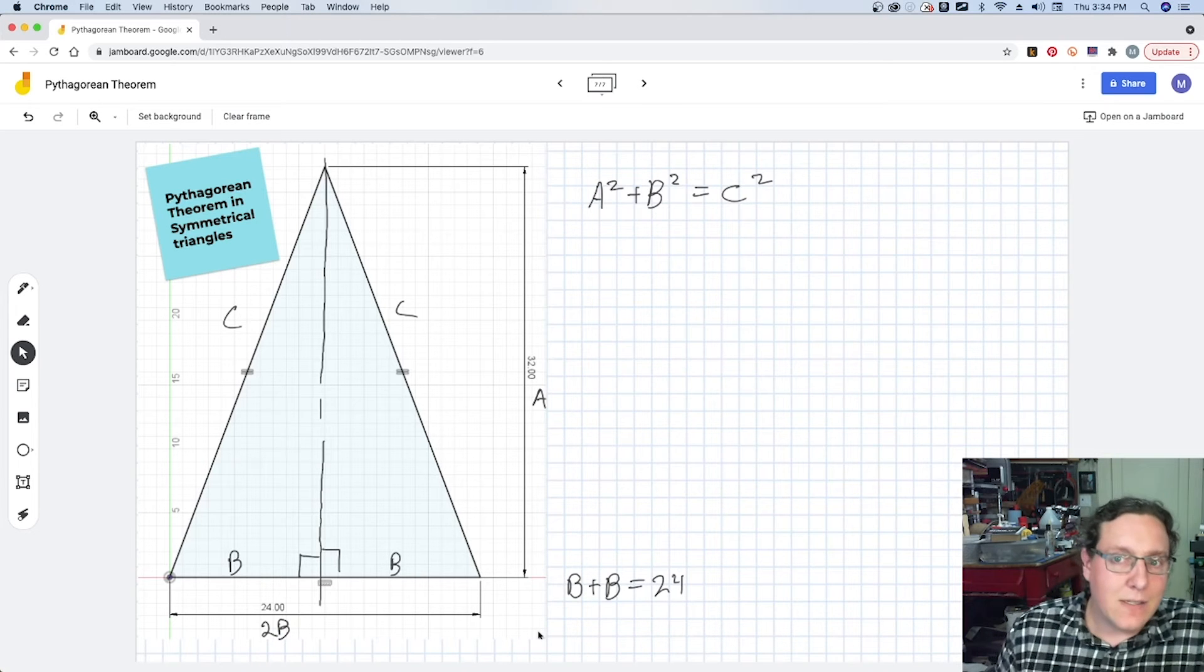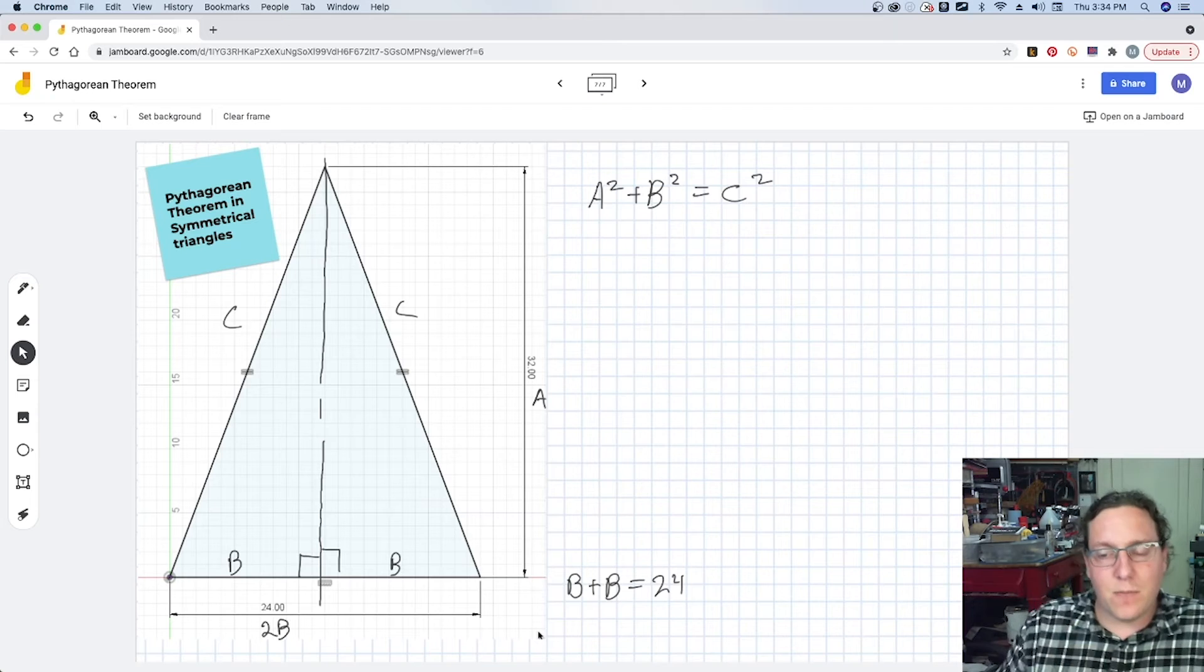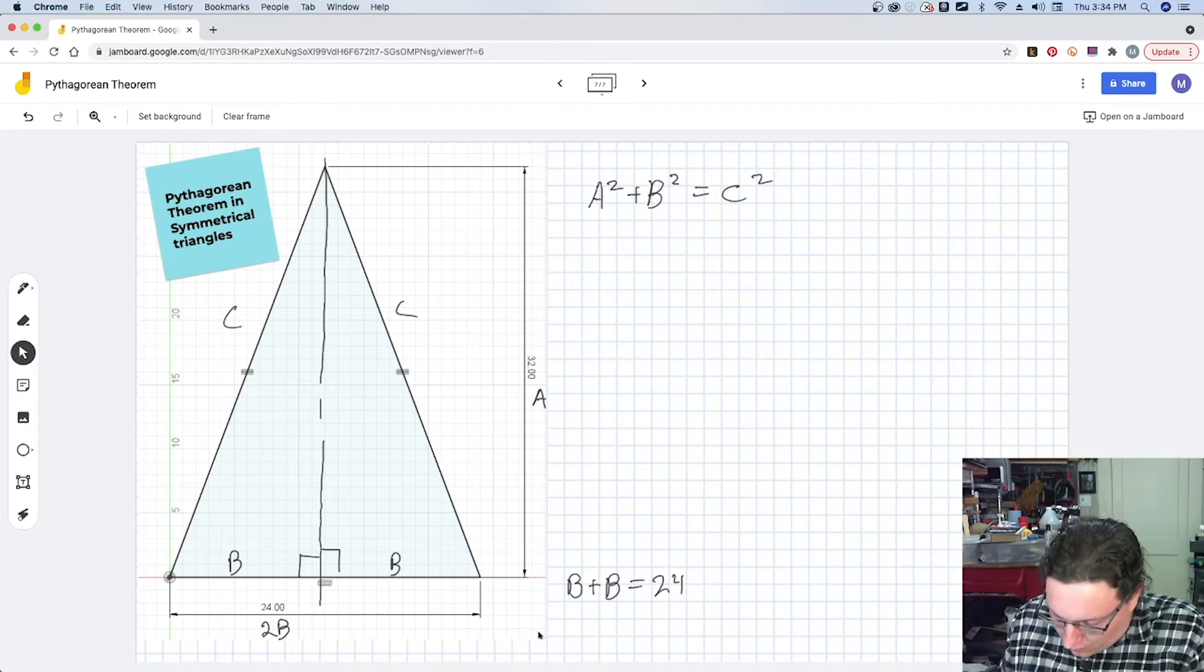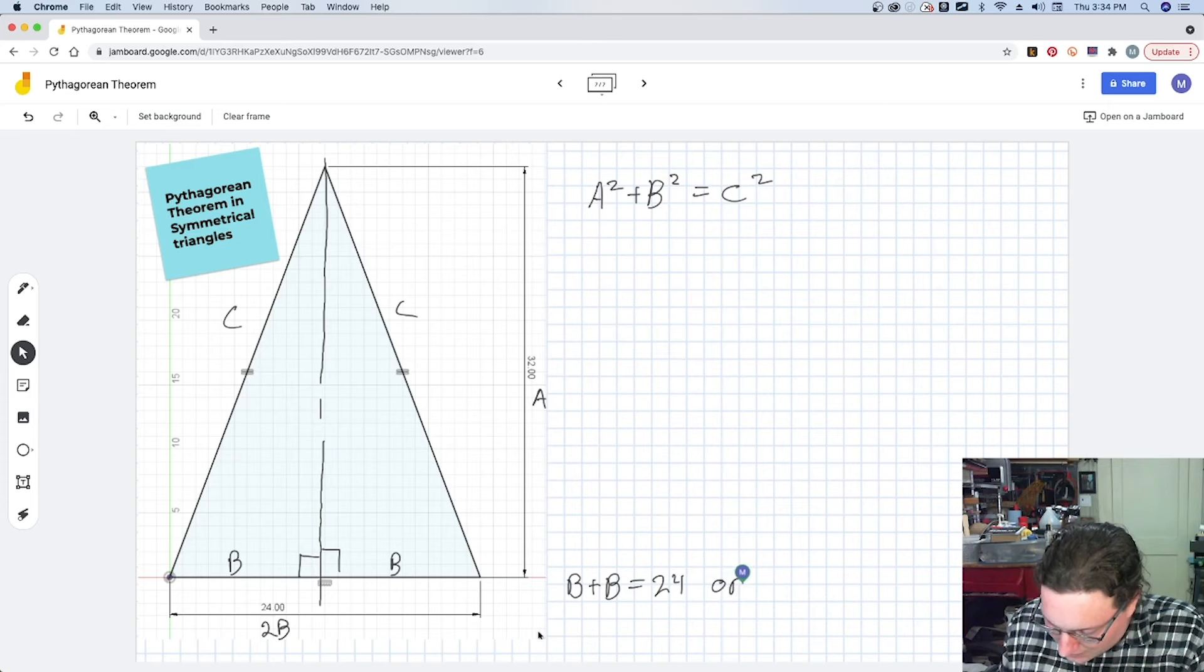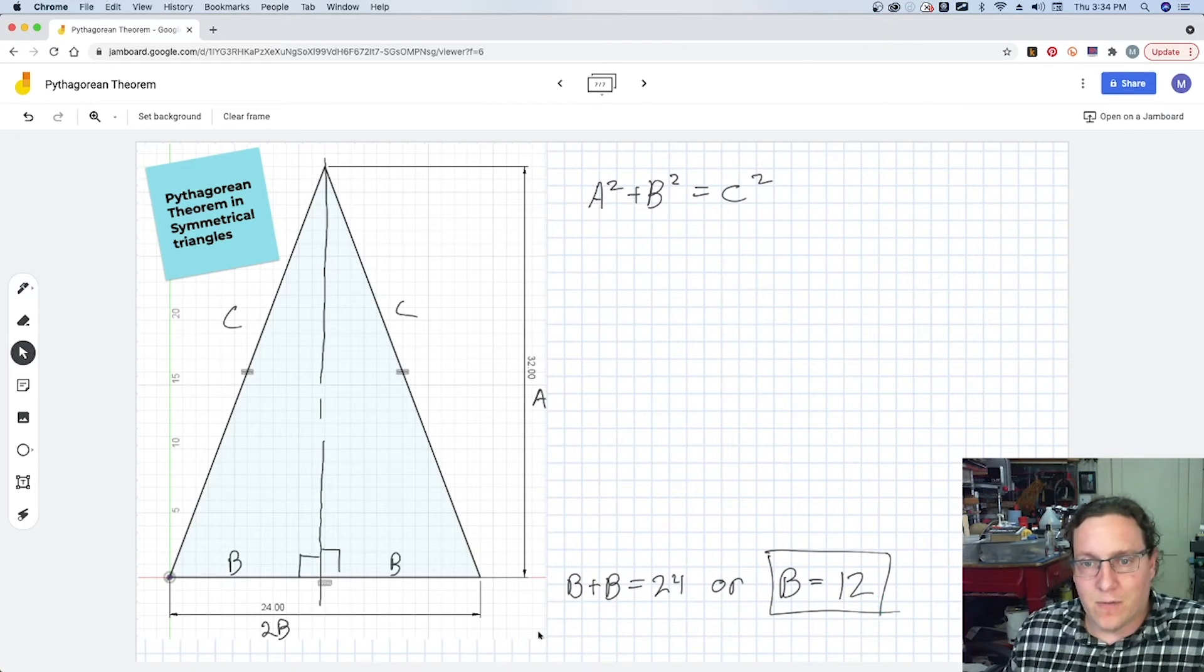If we know that, we're able to start breaking these numbers down a little bit further. B + B equals 24, or we could simply say that B equals 12. We'll just store that information away for a moment.